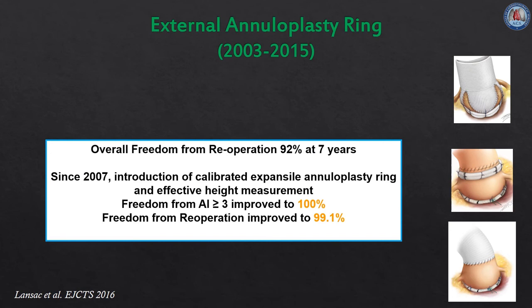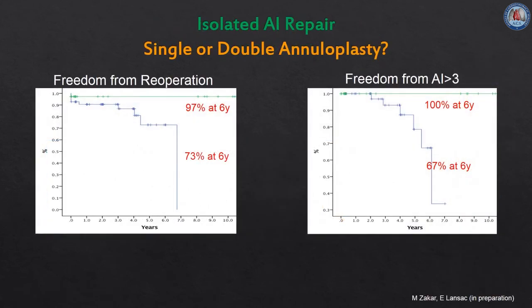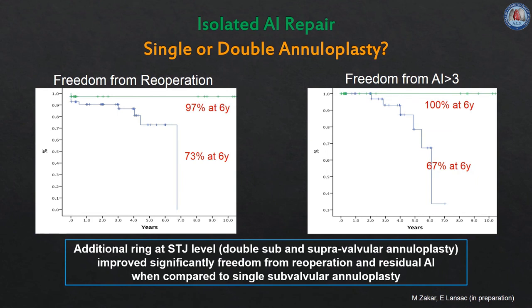Furthermore, since 2007, we have used a systematic effective height assessment, an expansile calibrated annuloplasty ring with a remodeling process, which has improved freedom from AI grade 3 or above to 100%, re-operation at 99.1%, and major adverse valve-related events at 96.3% at 7 years follow-up. More recently, we looked at the impact of STJ stabilization on long-term durability of isolated AI repair, showing that the use of double-ring annuloplasty was associated with 100% freedom from recurrence of AI grade 3 compared to 67% in the single annuloplasty group at 6 years. Furthermore, use of the double annuloplasty was correlated with 97% freedom from aortic valve-related re-intervention compared to 73% in the single annuloplasty group.